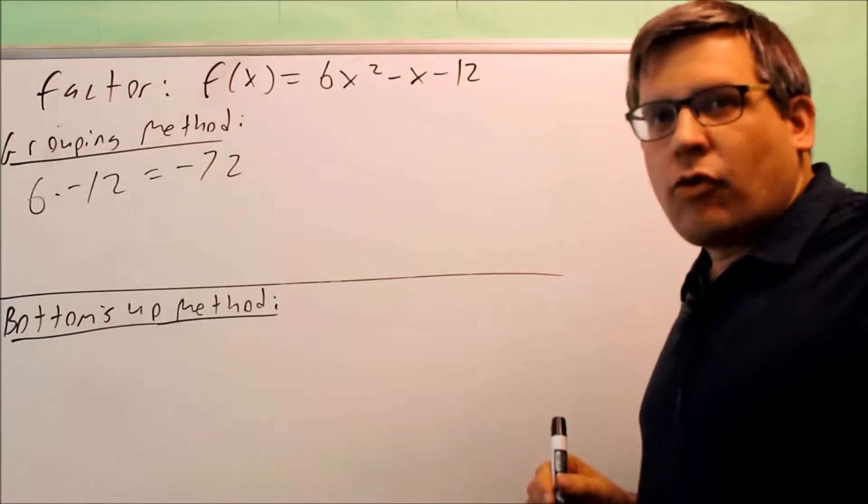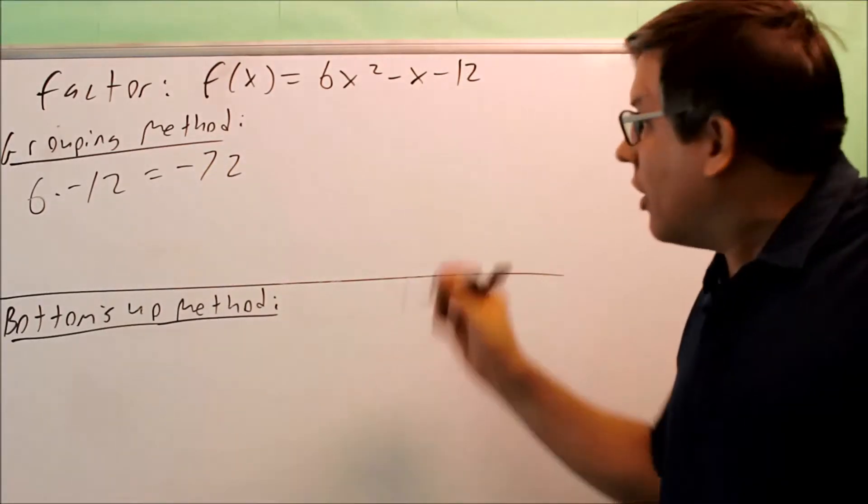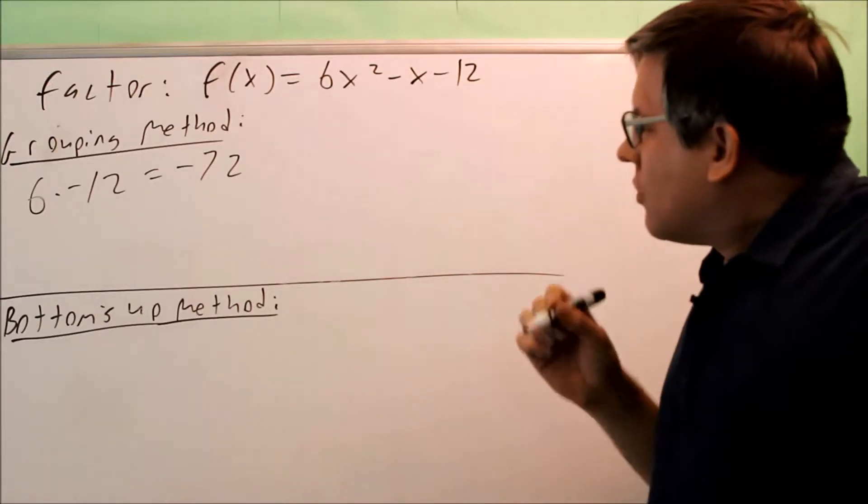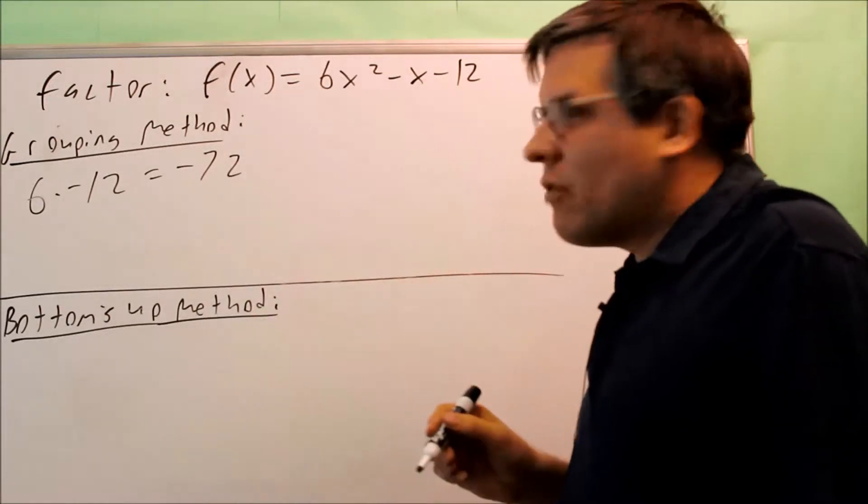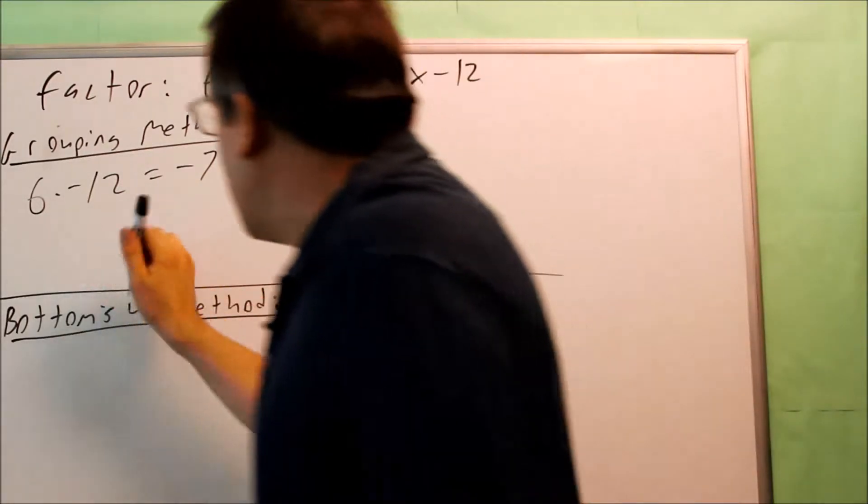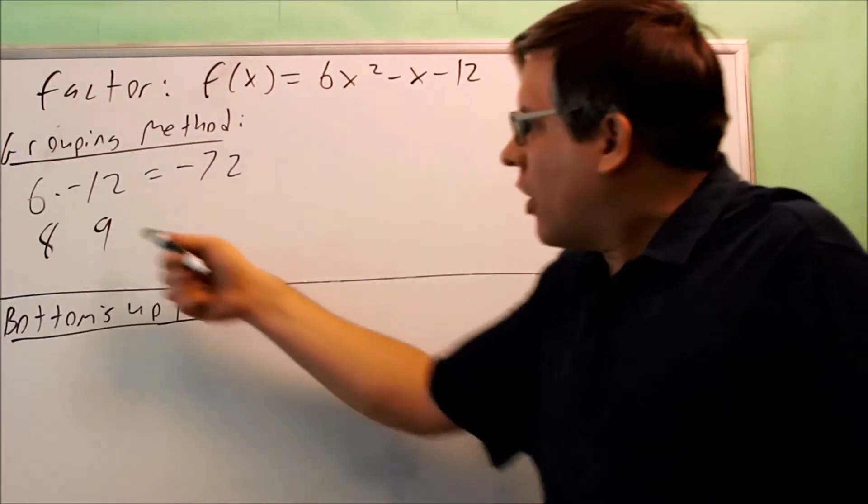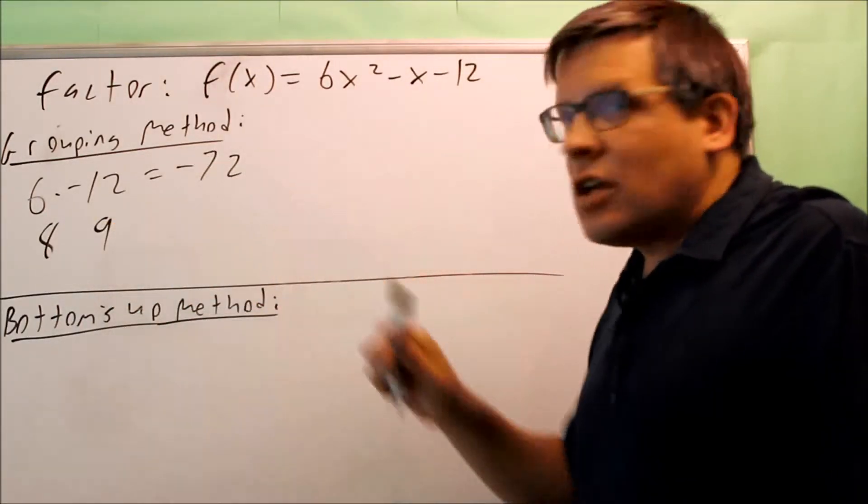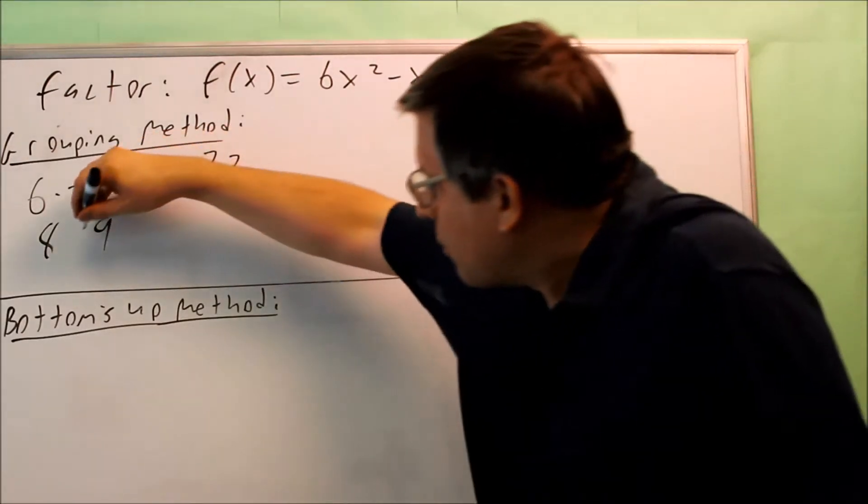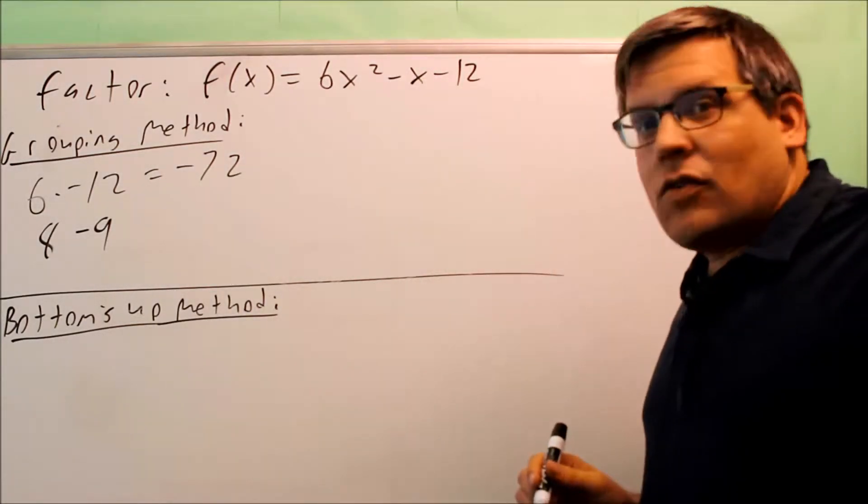What we want to do is we're going to look for what two numbers multiply to make negative 72, but if we add them together, we want them to add together to be the negative 1 here. So there's a bunch of different factors of 72. You could do 2 and 36, 6 and 12. The one I'm thinking of that works is going to be 8 and 9. So I know one of these is going to have to have a negative because I need to get negative 72, and I want to end up getting a negative 1 when I add those together.